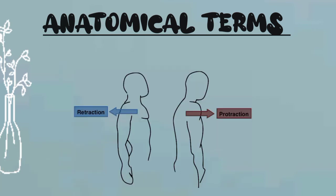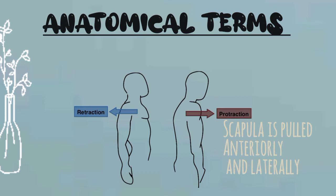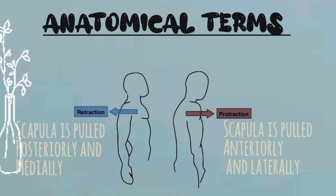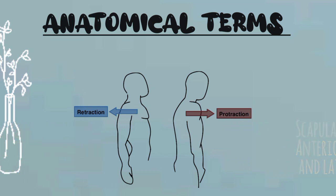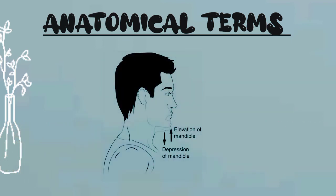The next terms are protraction and retraction. Protraction describes the movement of a body part forward — for example, bending your shoulder forward is called protraction. Retraction refers to the movement of a body part backward — for example, stretching your chest by pulling your shoulder backward is called retraction of the scapula.